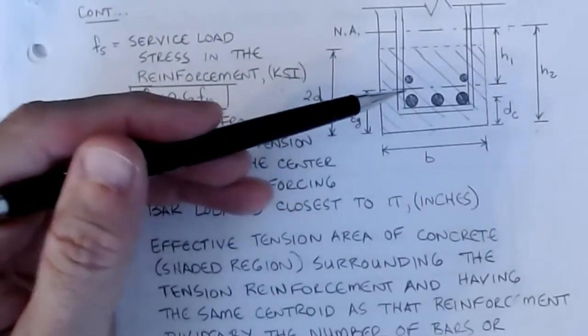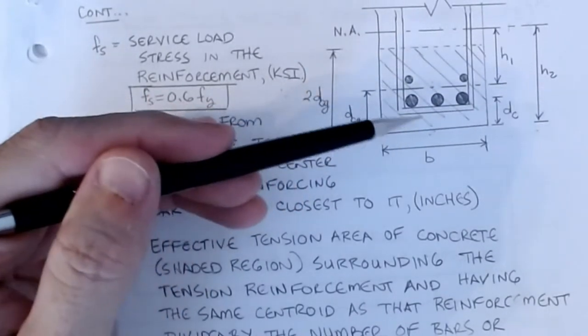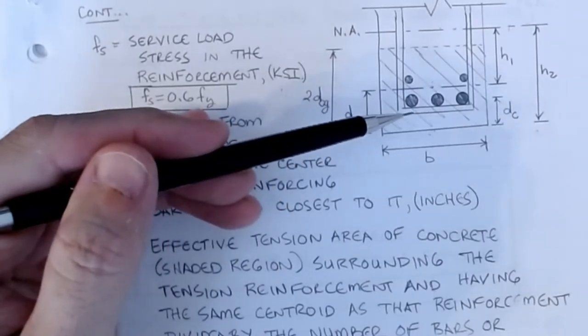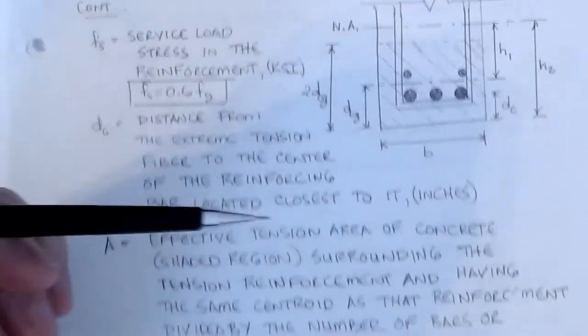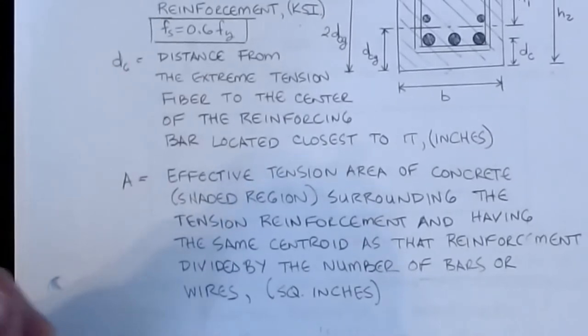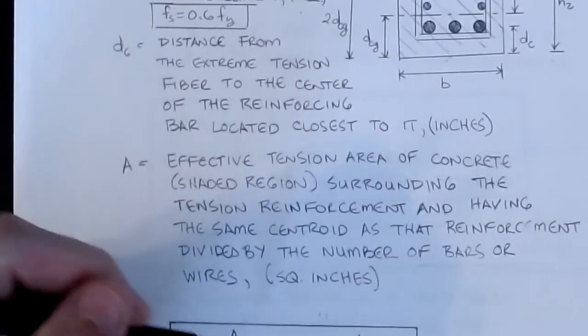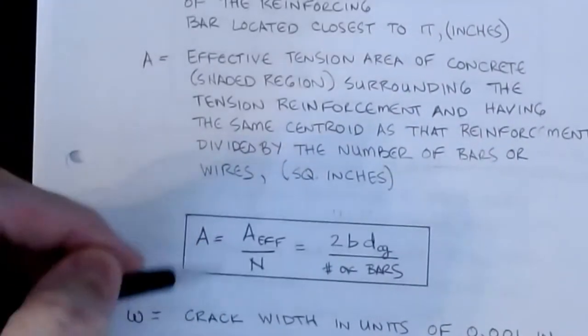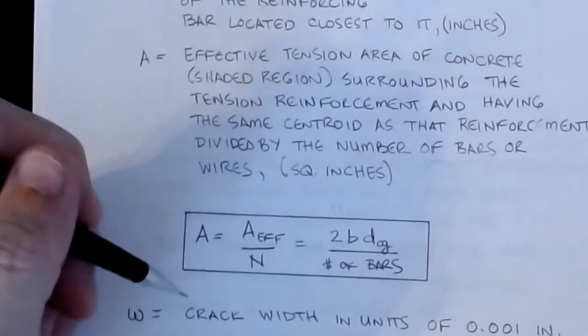We're going to take the number of wires that are being held in that area and basically divide that, so even though the bars are different sizes, we're looking at, in this case having five bars. As opposed to, it works out that smaller bars typically require more to account for the same area of steel. I can do one number nine, what takes me two number sevens, not exactly, but you get the idea. Your goal then is to get this A number as small as possible. So we're going to take the A effective, which is 2 times B times DCG, and then we're going to divide it by the number of bars. That's my A parameter that we saw in those equations.